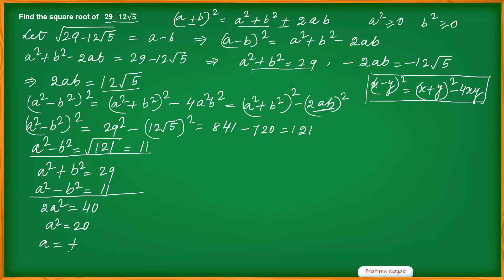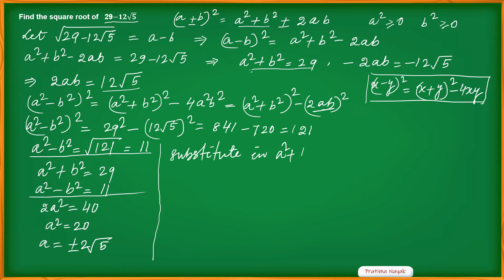So a squared equals 20, which gives a equals plus or minus 2 root 5. Substituting into a squared plus b squared equals 29: 20 plus b squared equals 29, so b squared equals 9, and b equals plus or minus 3.